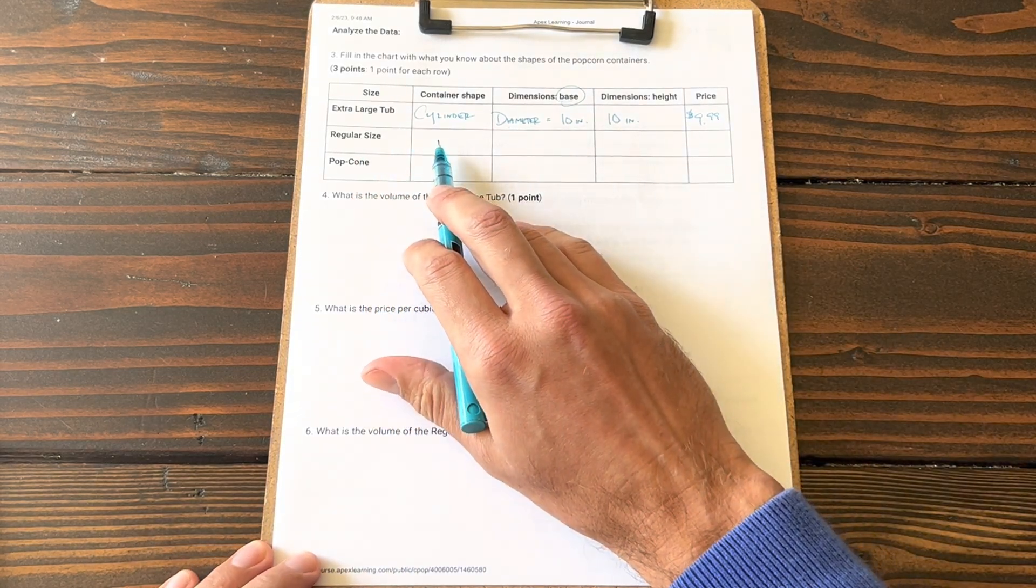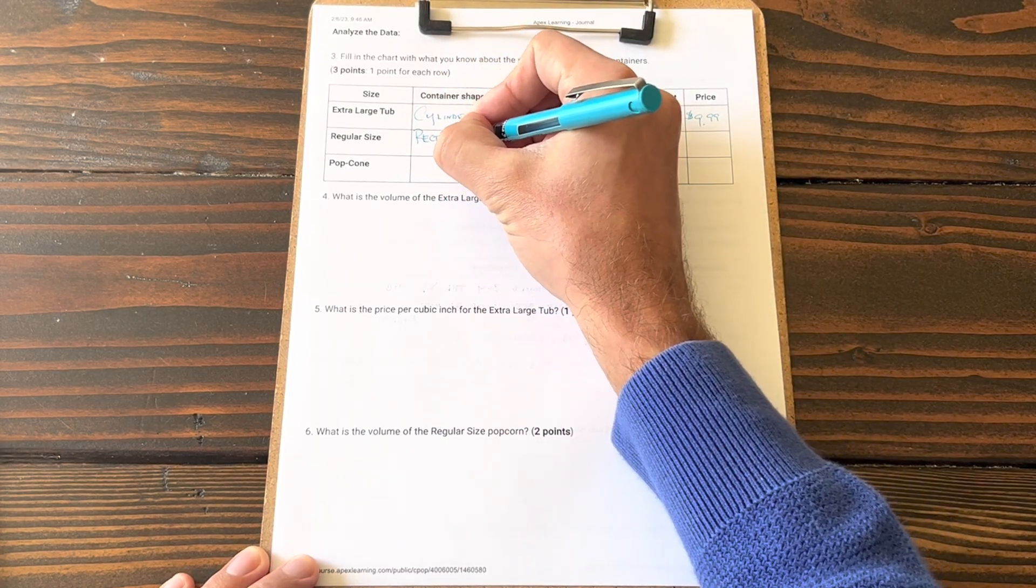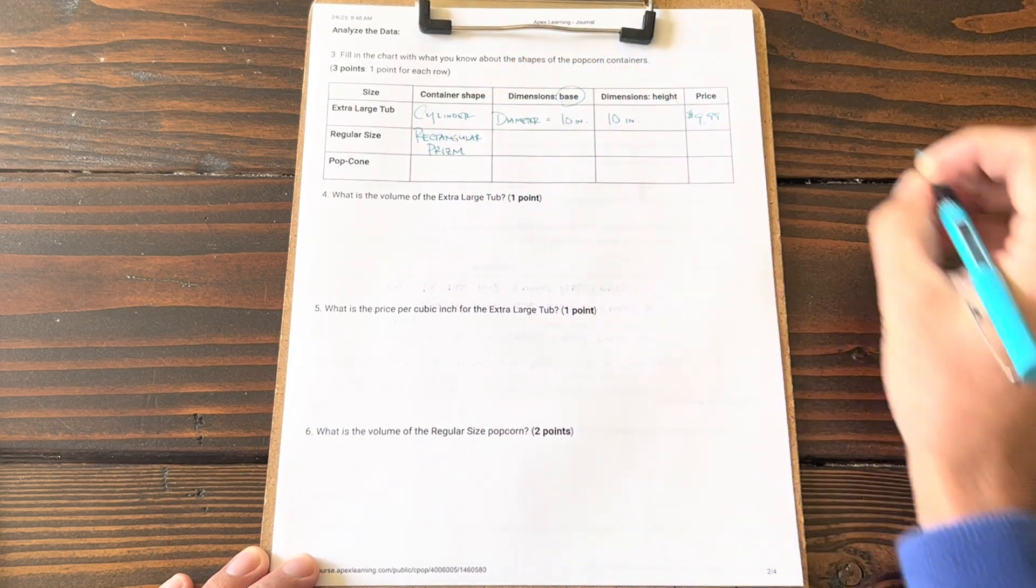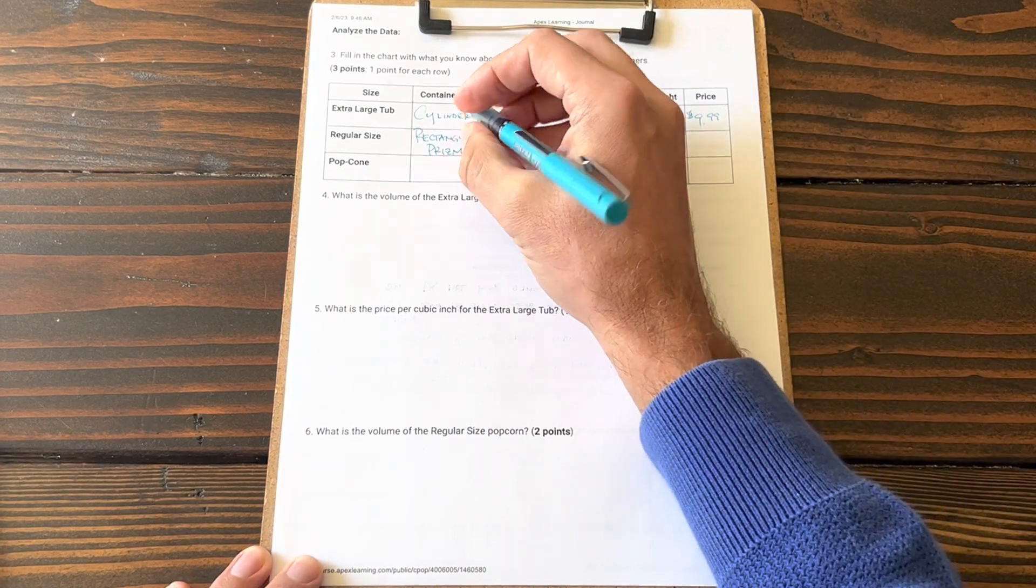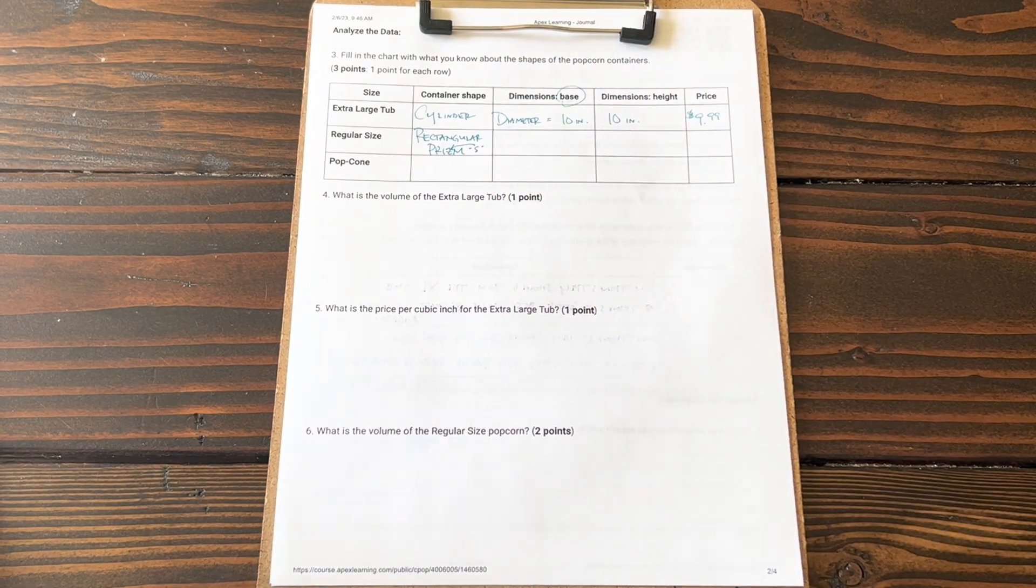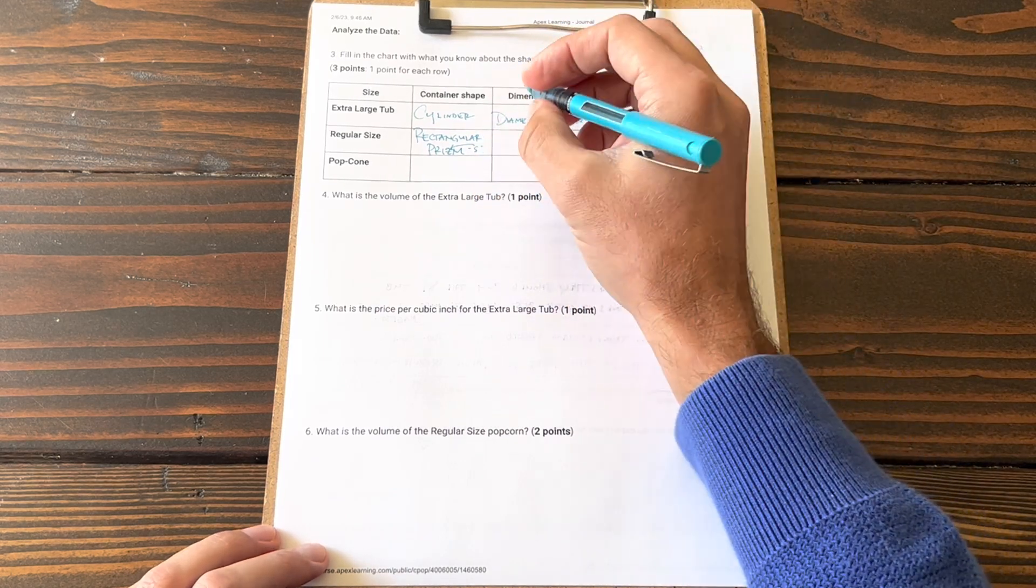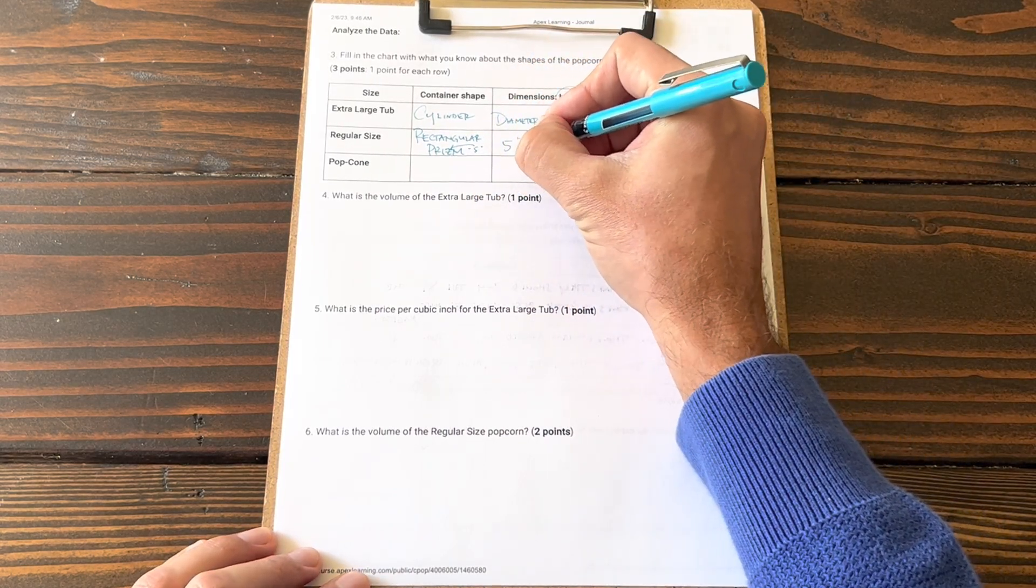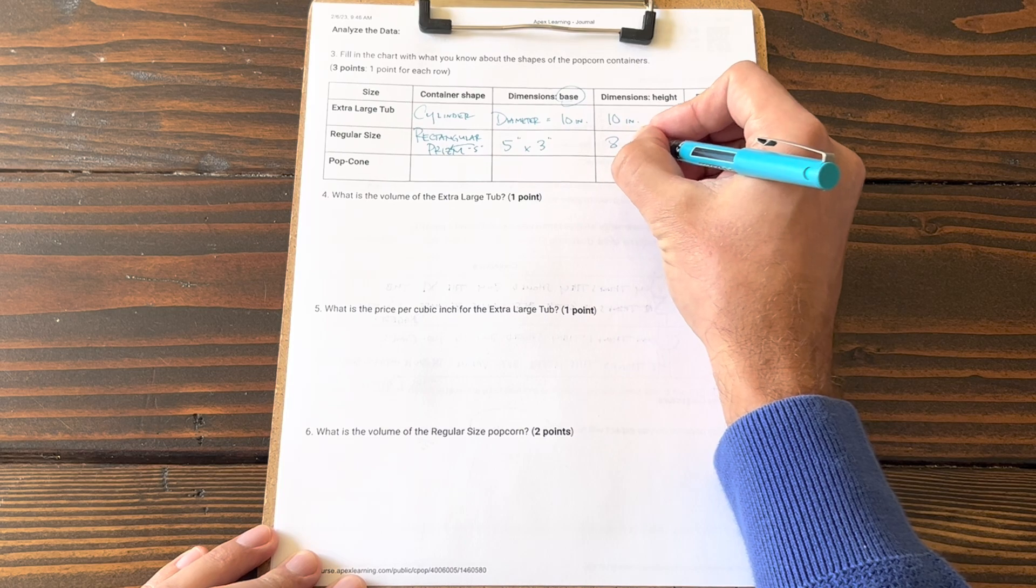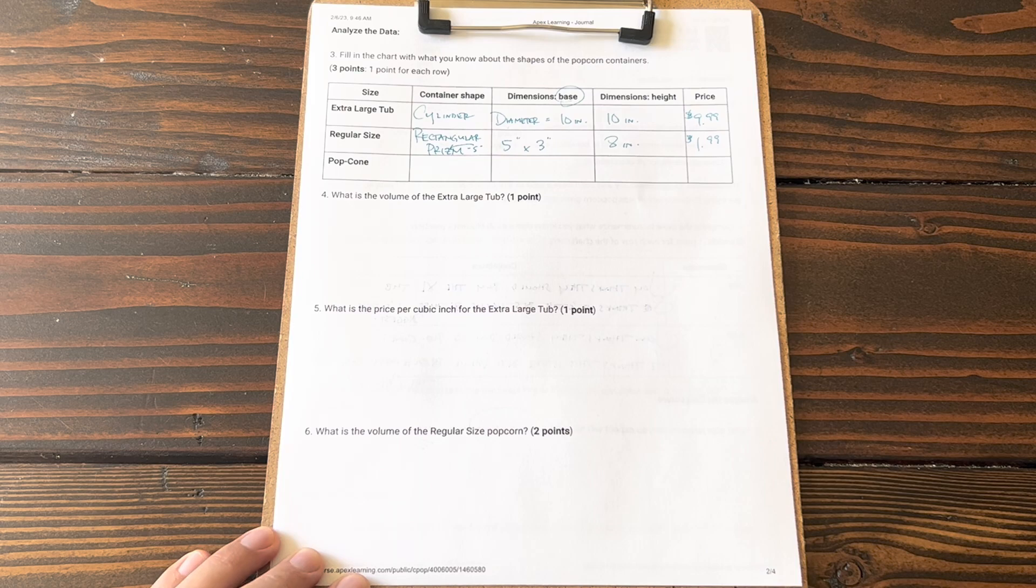The regular size: this shape is a rectangular prism. Dimensions of the base—the base is rectangular, it's a rectangular prism, so it's a rectangle—and this measures 5 inches by 3 inches. Height of the shape is 8 inches and the cost is $1.99.